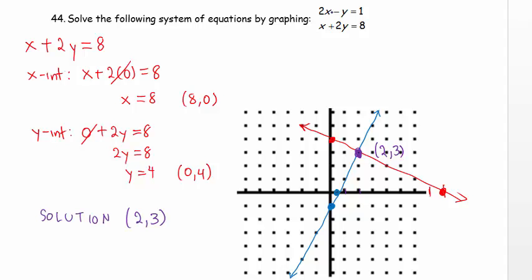Let's check it. We'll put 2 in for x and 3 in for y. This will read 2 times 2 minus 3 equals 1. 4 minus 3 equals 1. That's a true statement. Put 2 in for x, 3 in for y. This reads 2 plus 6 equals 8. Another true statement. So we are sure that 2 comma 3 is the solution. Let's check the answer key anyway.